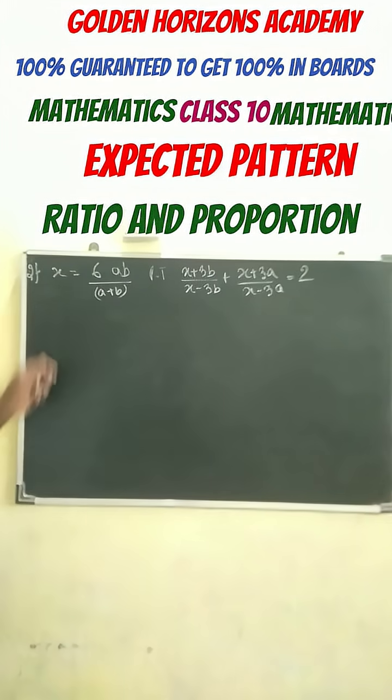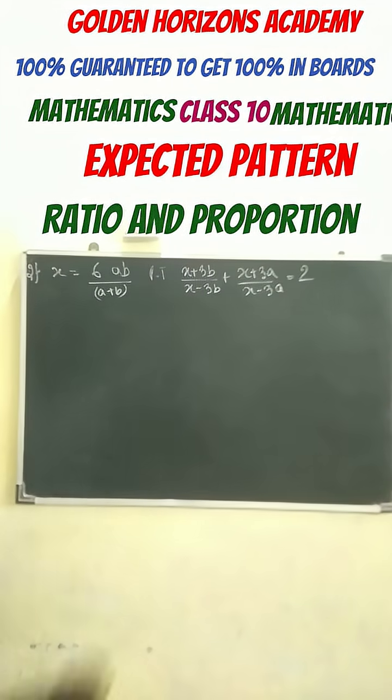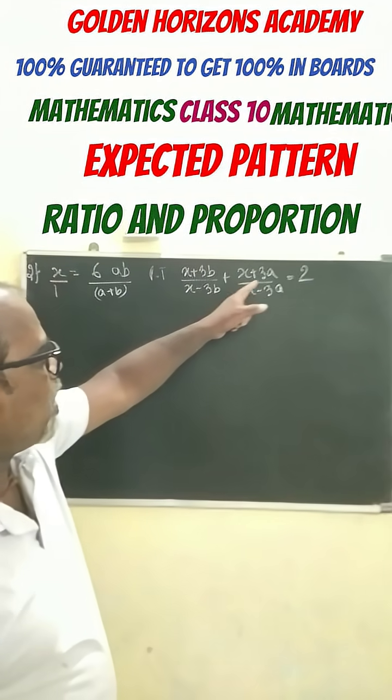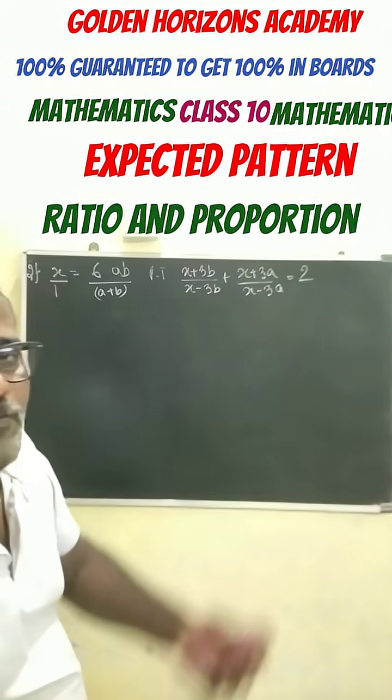Just see this very carefully. Here it is given this and we have to prove this. Now the thing is that here we have denominator 1 but we need 3p and also 3a. So how to change this? How to solve this problem?